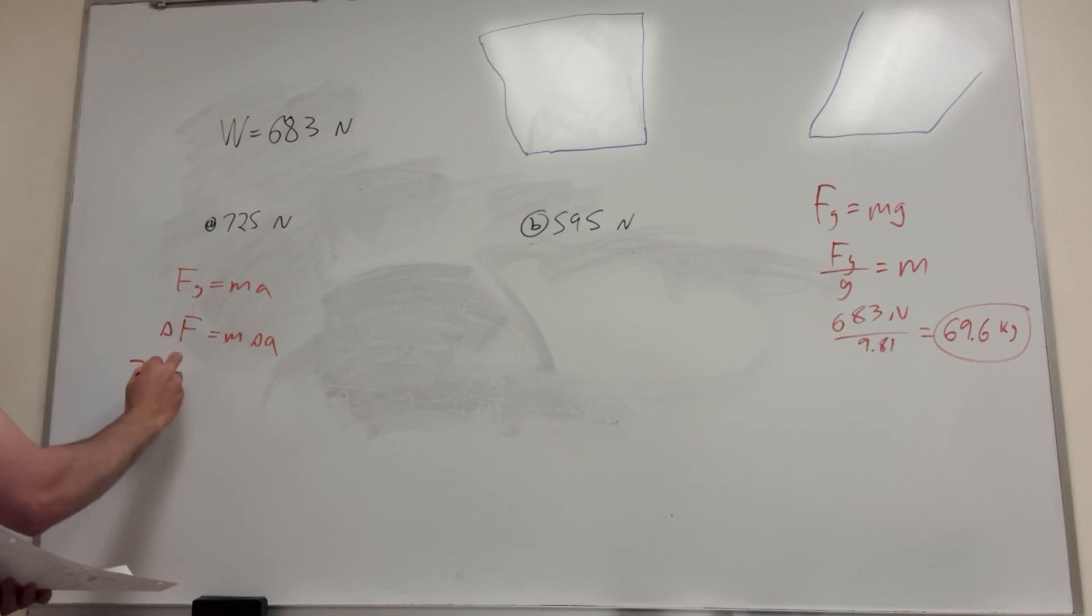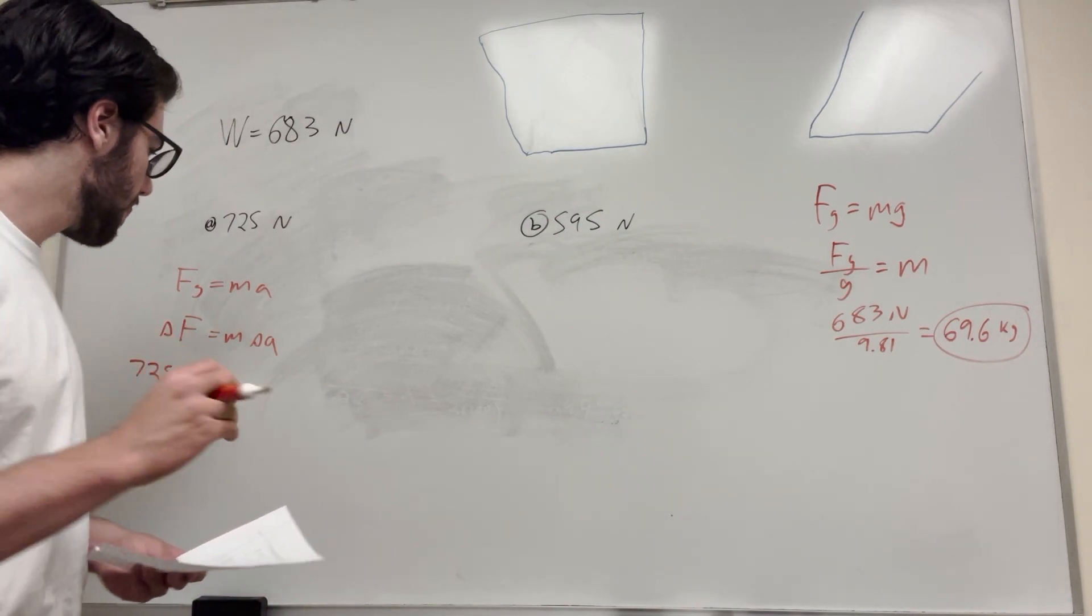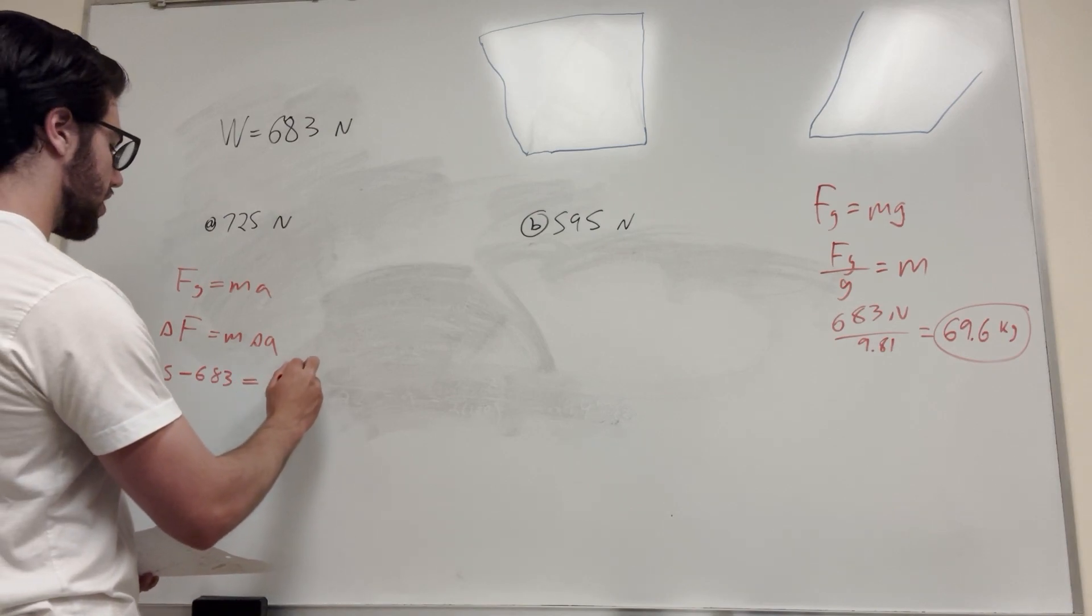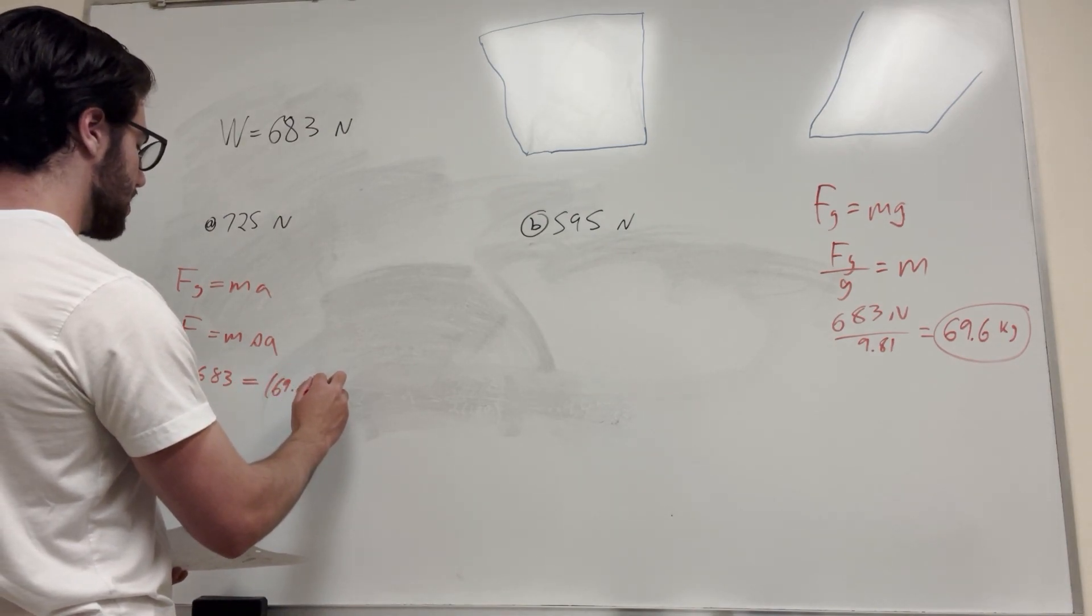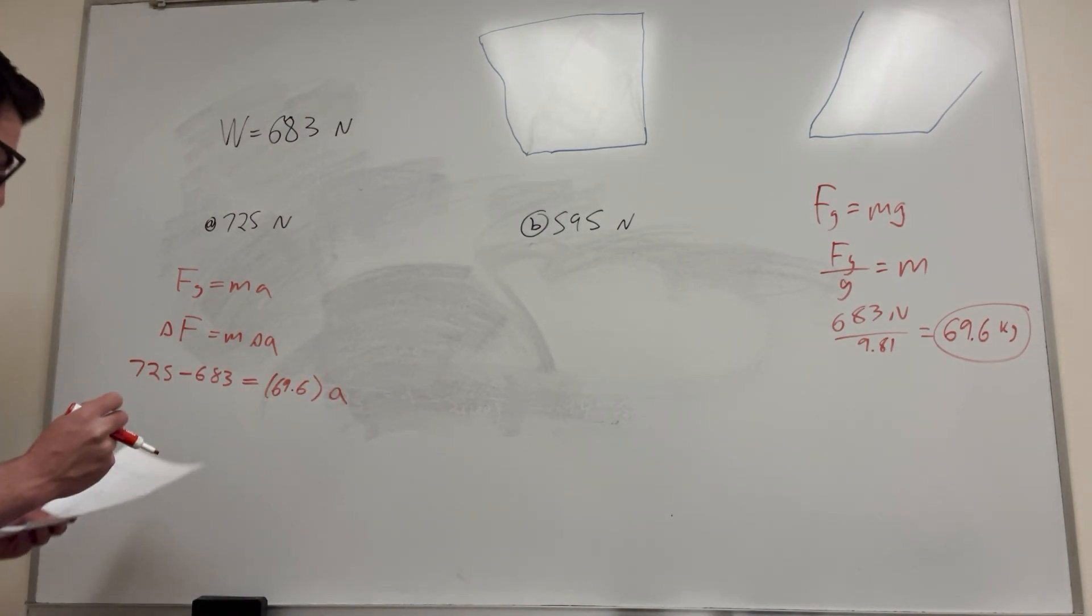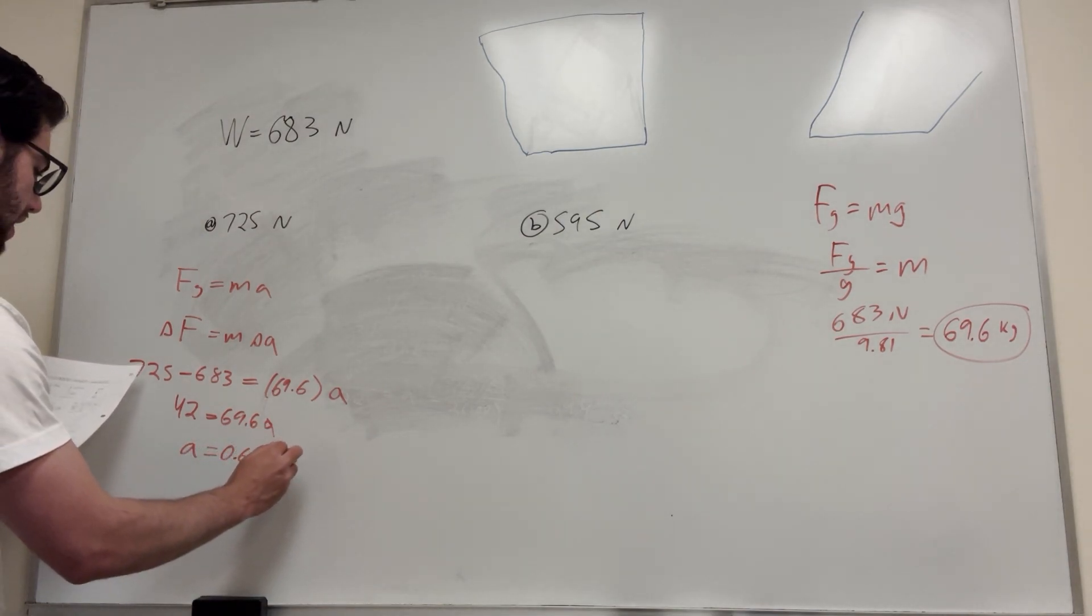So it's going to be 725 newtons minus 683 newtons. That's basically telling us how much weight did we increase. And then our mass of course is 69.6 kilograms, and then acceleration is just going to be A for now. So then, how does this calculate out? Well, you get 42 newtons equals 69.6 acceleration. So if you divide by that 69.6, you're going to get acceleration equals 0.60 meters per second squared.